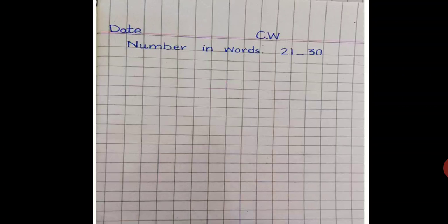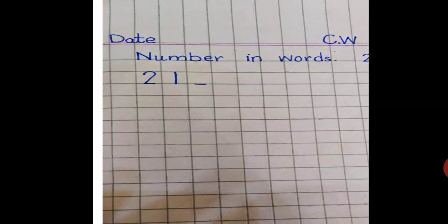After that you are going to write here 21, dash, and 30. Today you have to do number in words 21 to 30. Now skip one box from upper side, one box from left side, and write 21.